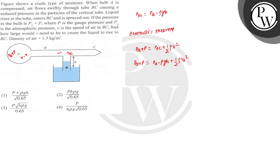So when we solve this, PA PA cancels out, so from here I'll get P plus rho GH equal to 1 by 2 into rho, whose value is 1.3, into V square.